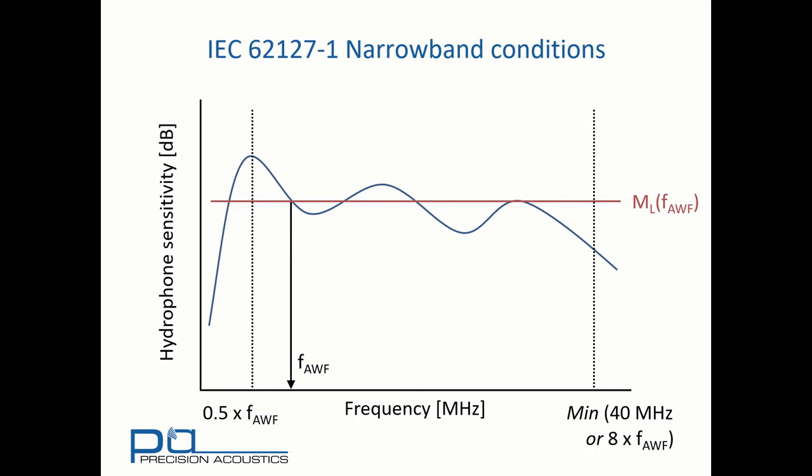We can also determine the sensitivity of the hydrophone at the acoustic working frequency of the source. From this, we can specify two levels that are plus or minus 3 dB either side of this.